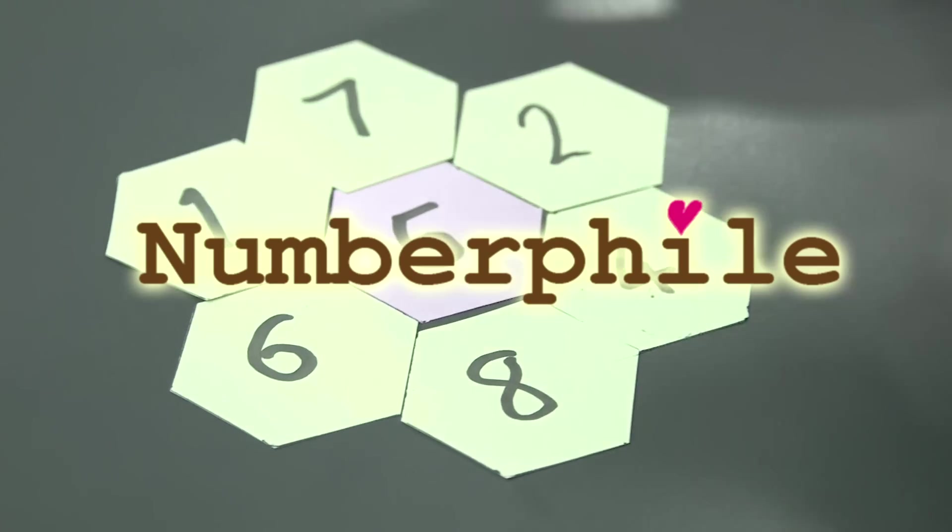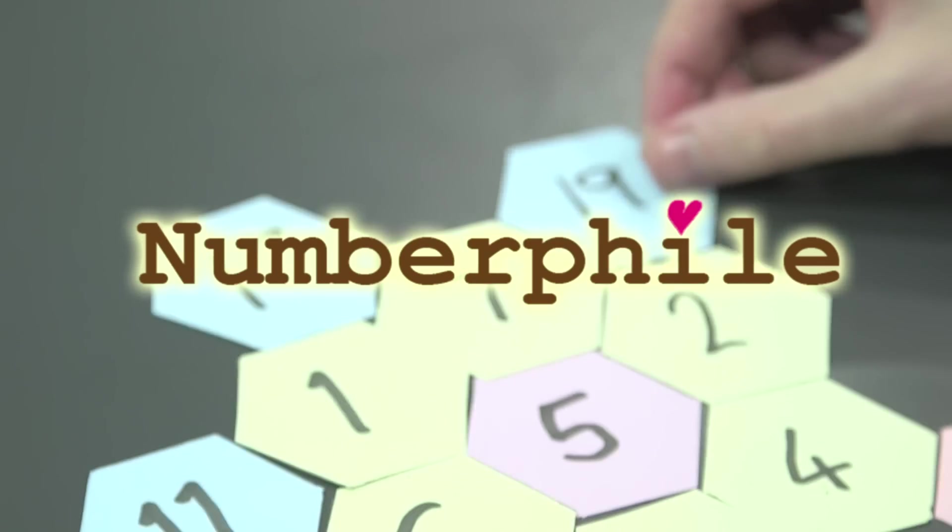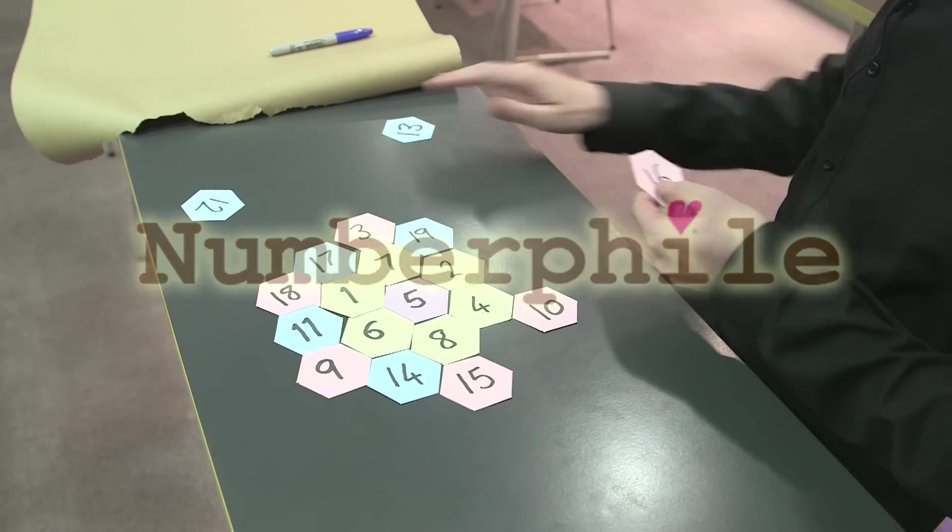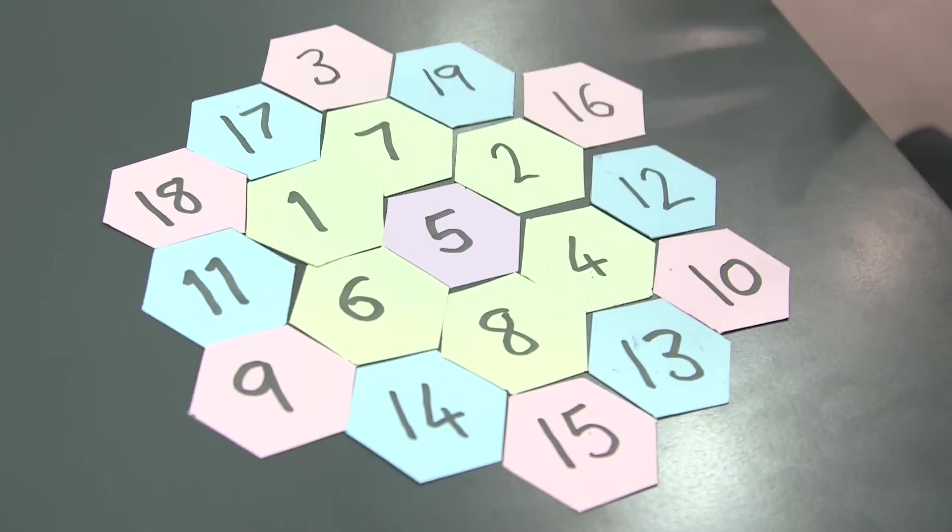Seven, and I've got some more numbers, let's do those. Nineteen, and let's do thirteen. So what I've got here is a honeycomb, right, of hexagons.